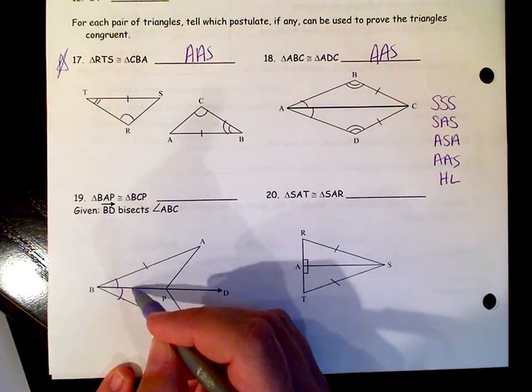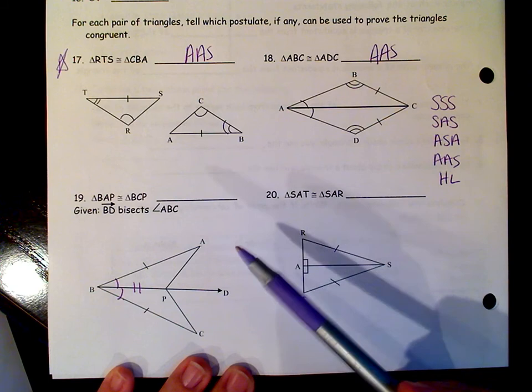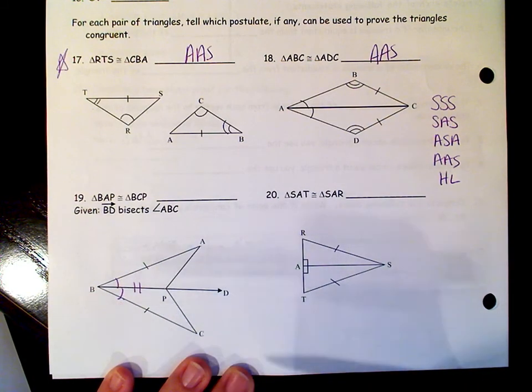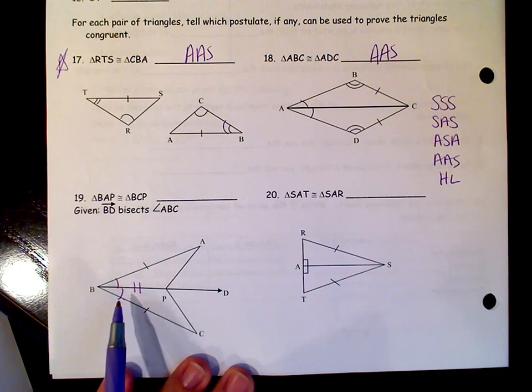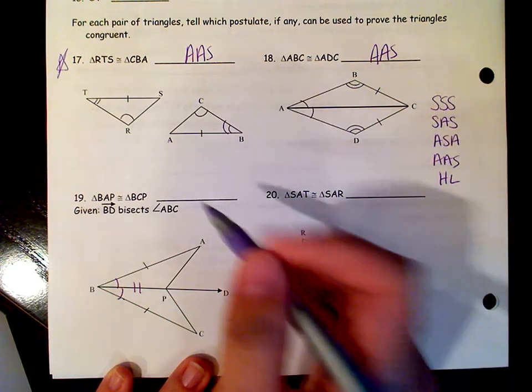Because of the reflexive property, BP is congruent in both triangles. So we have two sides in each triangle and one angle. And that angle is the included angle between those two congruent sides. So this one is going to be side angle side congruence.